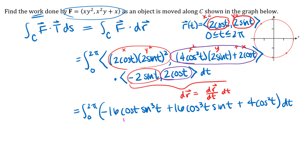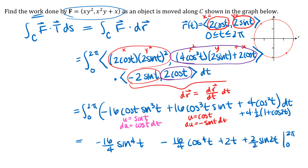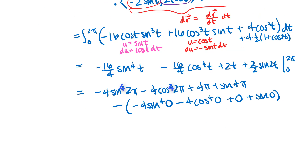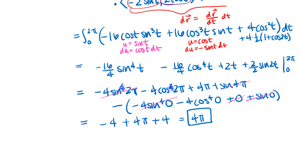After doing the dot product I proceed to integration. The first term uses a u-substitution with u = sin t, the second term uses u = cos t, and the last term uses the double angle identity for cosine squared. Plugging in the limits of integration carefully — making sure not to cancel things that aren't actually zero — gives a final answer of 4π. Positive work means the net flow of the vector field along that curve is with the curve.